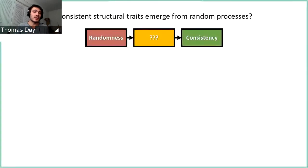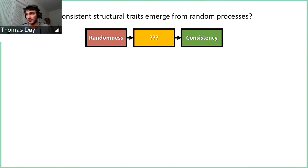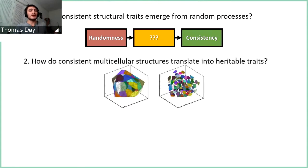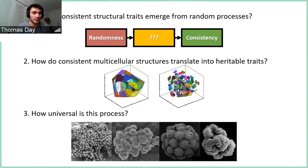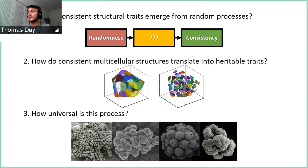Consistent processes can actually emerge from highly random processes, and they can be highly consistent — that's going to be the first part of my talk. In the second part, I'll say what kinds of consistent structural traits lead to heritable multicellular traits and what this means for actual multicellular organisms. Then lastly, I'll explore how prevalent this process is among different kinds of early multicellular organisms.